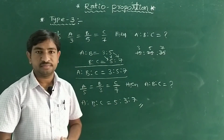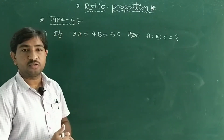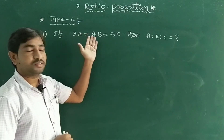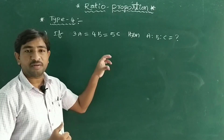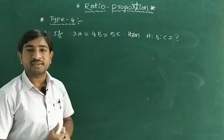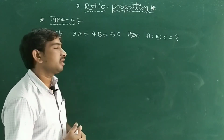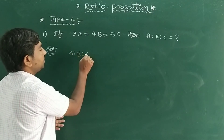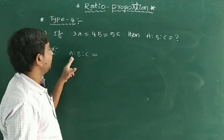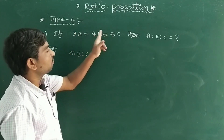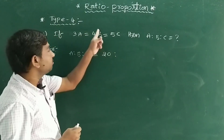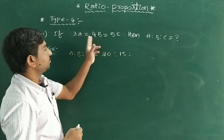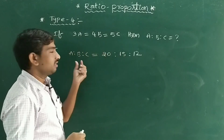Now Type 4: if 3A = 4B = 5C, find A:B:C. In the shortcut method, to find the value of A, leave A and multiply the other two coefficients: 4×5=20. For B, leave B and multiply: 3×5=15. For C, leave C and multiply: 3×4=12. So A:B:C = 20:15:12.